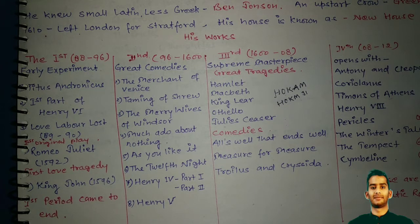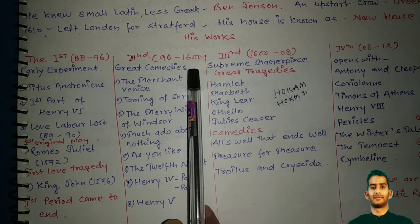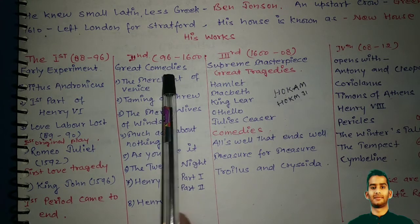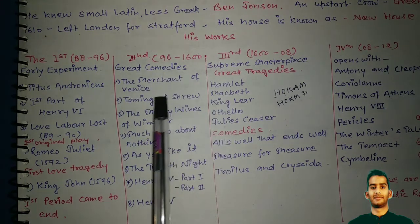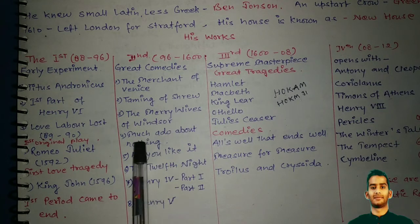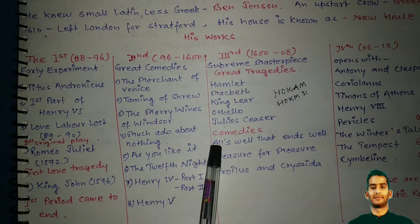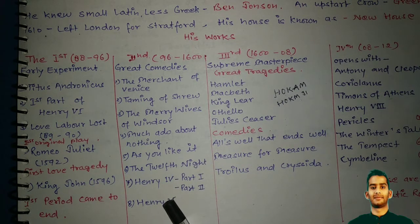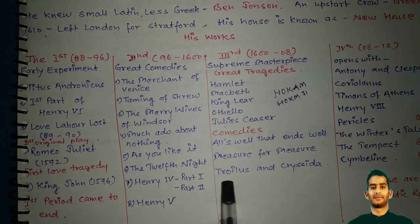The second period was about great comedies: The Merchant of Venice, The Taming of the Shrew, The Merry Wives of Windsor, Much Ado About Nothing, As You Like It, and Twelfth Night. It also includes history plays: Henry IV Part One, Henry IV Part Two, and Henry V.